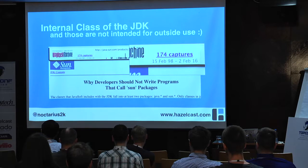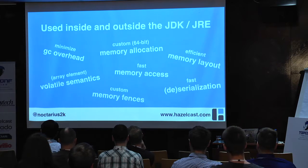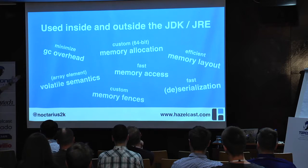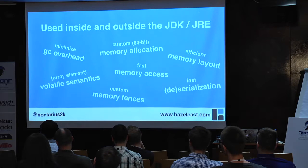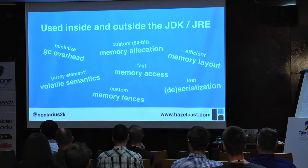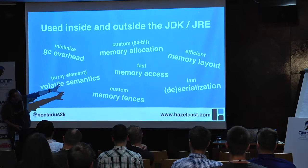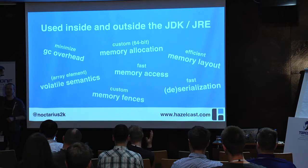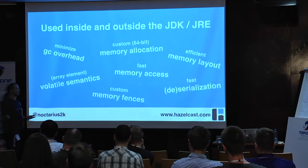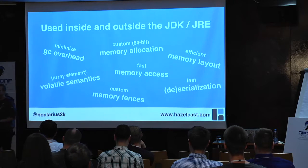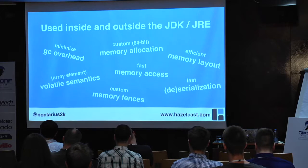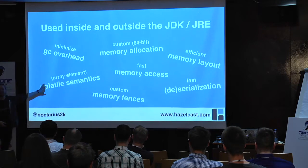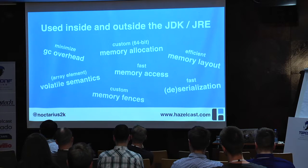There are some things in sun.misc.Unsafe that are very interesting. GC overhead is a common problem with larger Java applications — we can minimize it with custom memory allocation and custom memory layout. We can have special memory fences to ensure visibility to other threads. Things that normally work with volatile or synchronized. Fast deserialization — there is almost no serialization framework that doesn't use sun.misc.Unsafe.